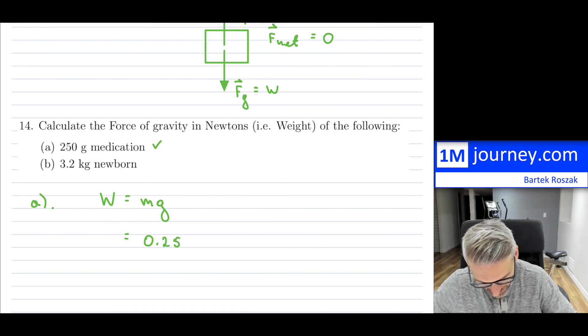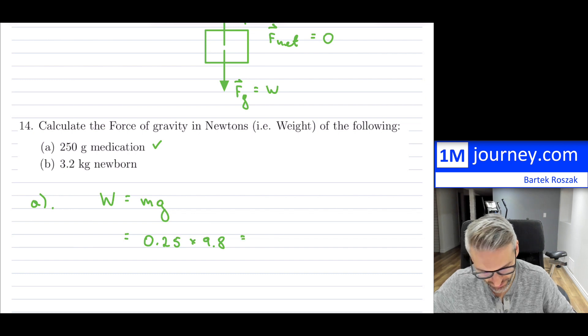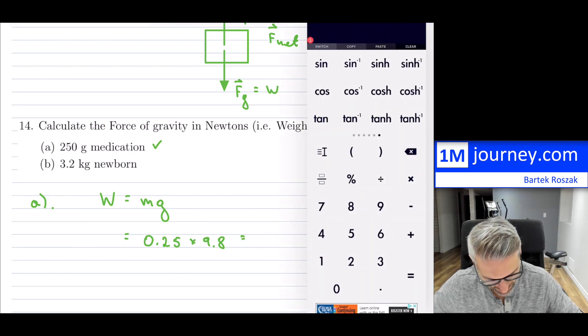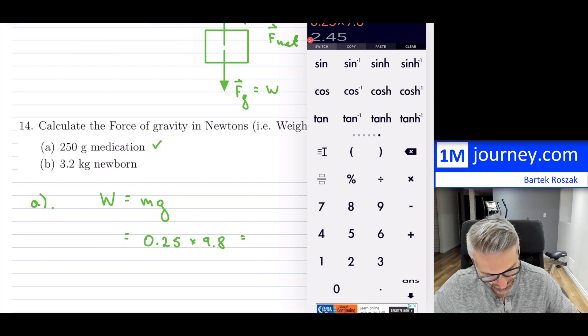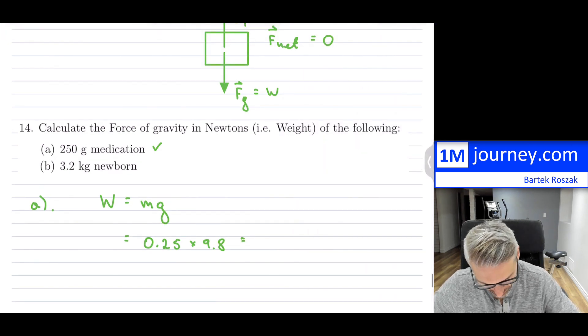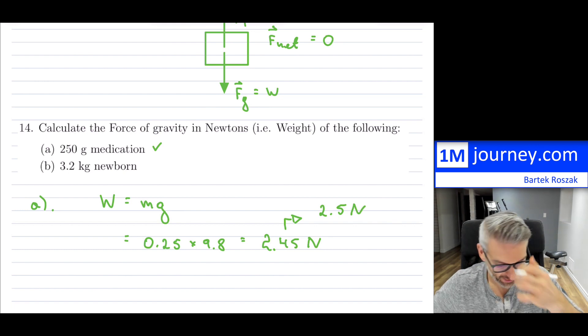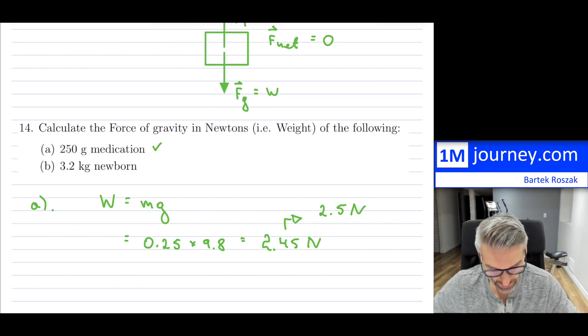In this case, just be careful with the first one because it's in grams, so you'd have to change it to kilograms. It's going to be 0.25 times 9.8, and this will give you the result. So 0.25 times 9.8—it's very minimal, so it's 2.45 Newtons, or if you want this to two significant figures, it's just 2.5 Newtons.